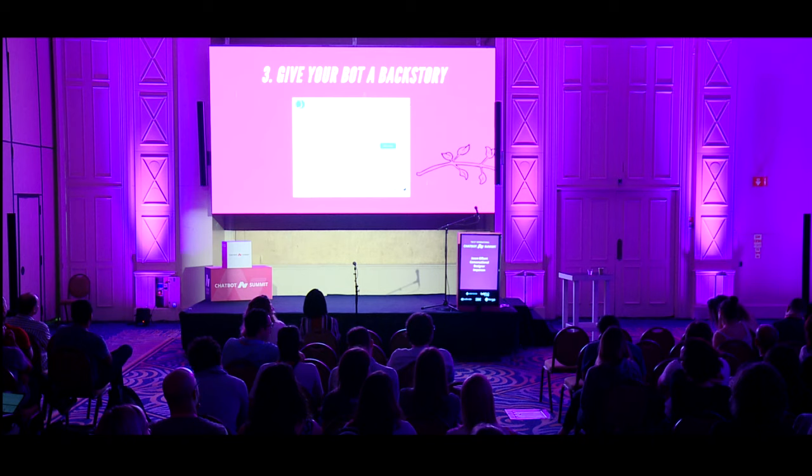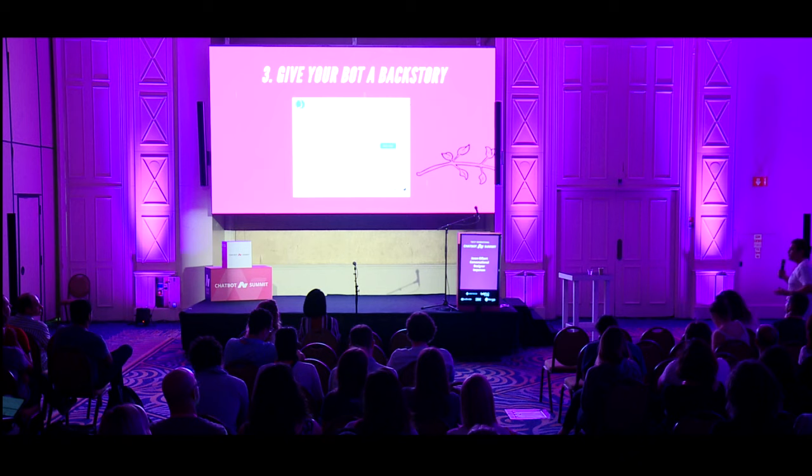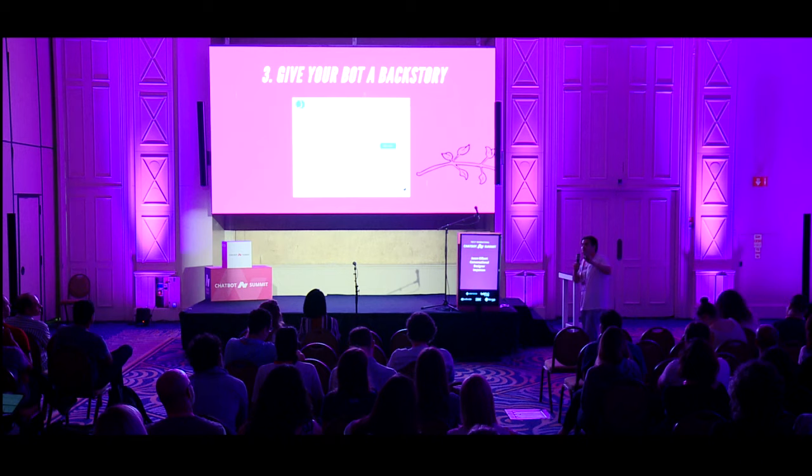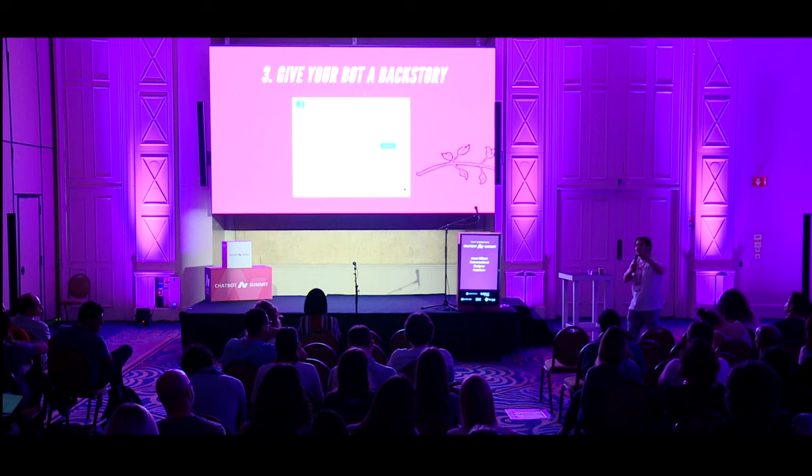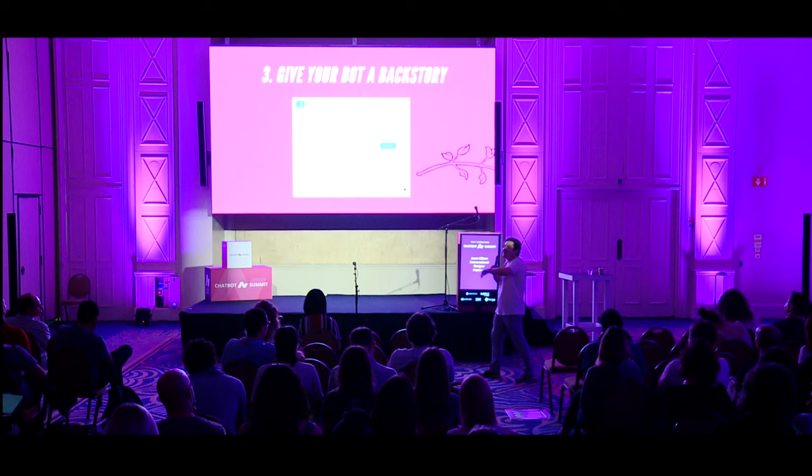Everyone working on the bot needs to be consistent. We have a team of people in Israel and in LA and other parts of the world, and we all work on the same character. You can't have one person saying 'I think he would say this' and another saying 'I think he would say that.' We have a character Bible — and in that character Bible you list how the bot responds to positive interjections, negative interjections, and how it reacts to certain situations.